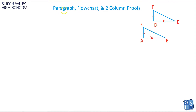The first one is paragraph proofs — that's totally intuitive. Just for an example for all three, we're going to use the same triangles. The question would be something like: prove that triangle CAB is congruent to triangle FDE. So our job is to prove this. Which proof should we use? Well, we'll use all three. In the case of a paragraph proof, you literally write a paragraph.